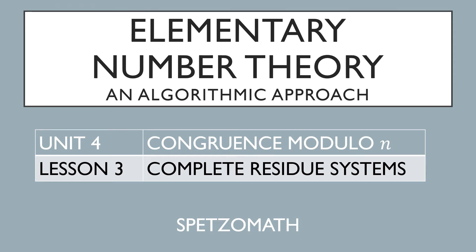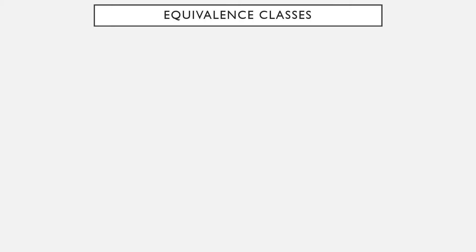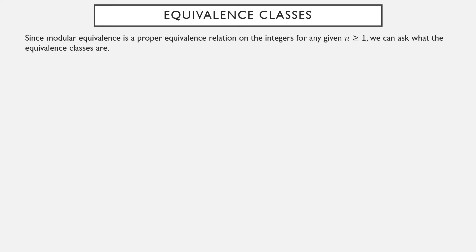Continuing our study of congruence modulo n, we now introduce something called a complete residue system. One thing we haven't done yet is discuss equivalence classes. Since modular equivalence is an actual equivalence relation, it partitions the integers into different equivalence classes. Any equivalence relation on a set will partition that set into equivalence classes, where everything in each set is related to the other things in that set by the relation.